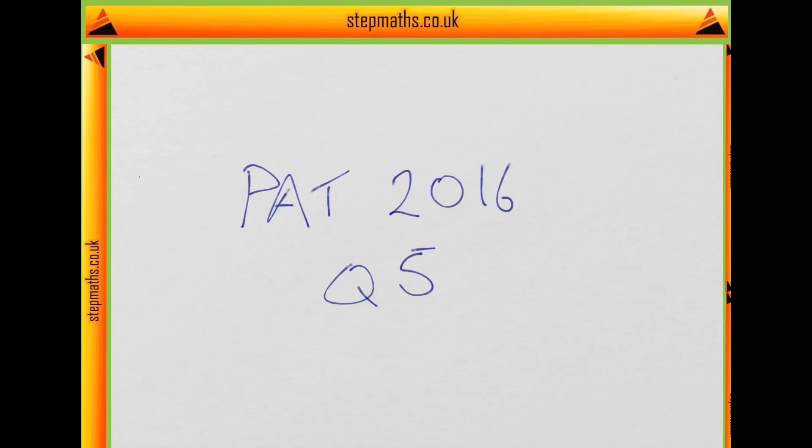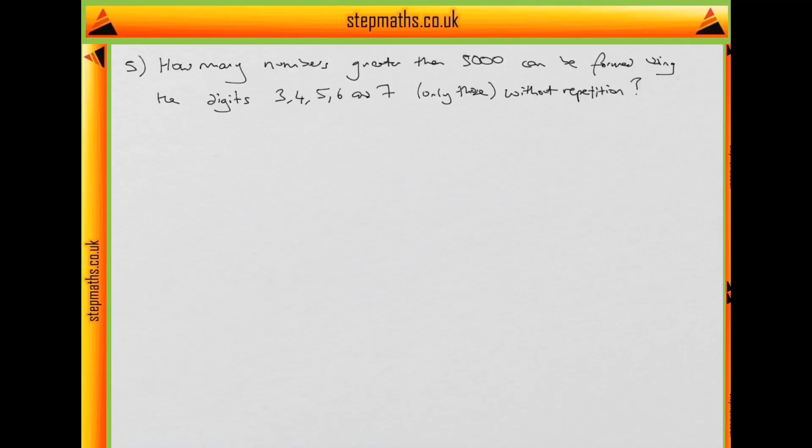Hi, today I'm going to go through a 2016 Pat paper looking at question 5. In question 5 it asks how many numbers greater than 5,000 can be formed using the digits 3, 4, 5, 6, 7 and only those digits without repetition.